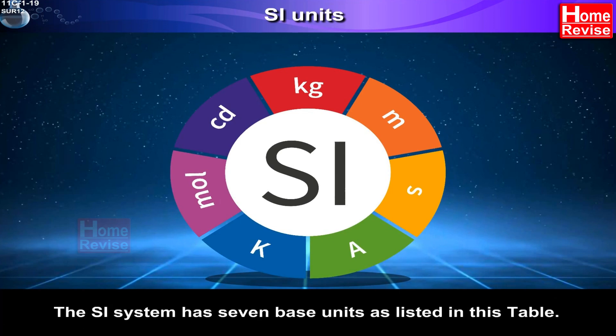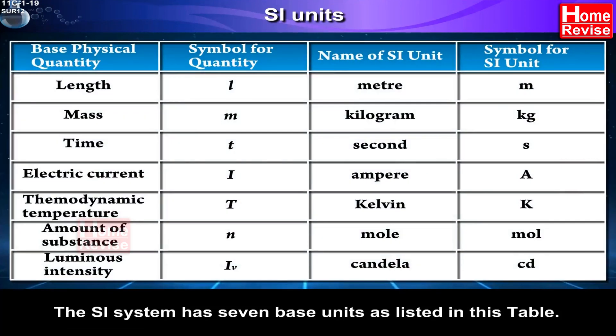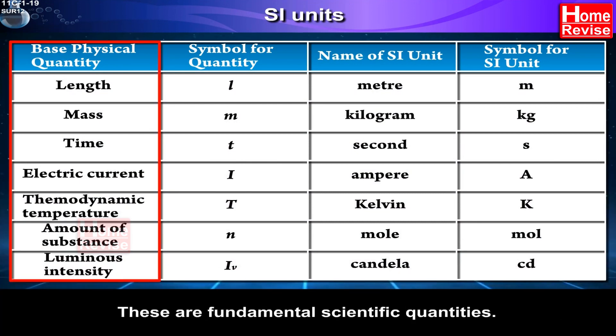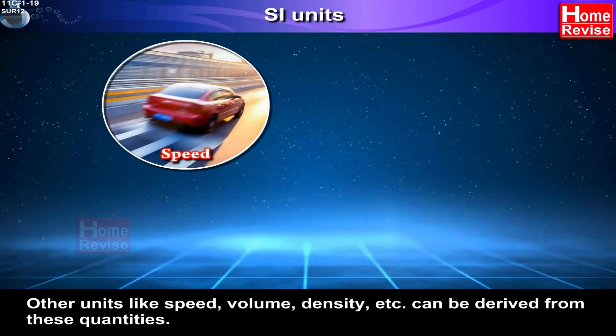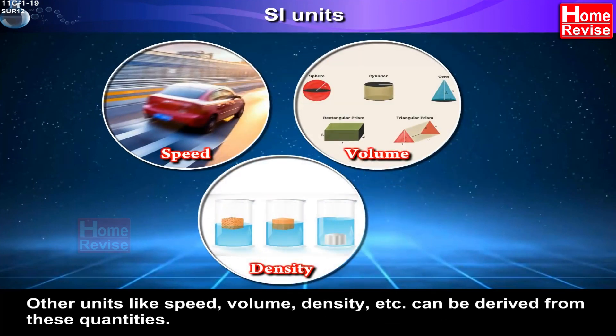The SI system has seven base units as listed in this table. These are fundamental scientific quantities. Other units like speed, volume, density, etc. can be derived from these quantities.